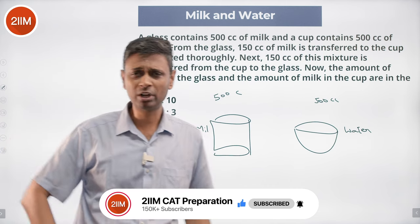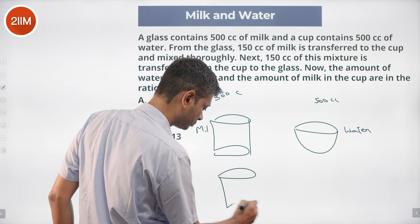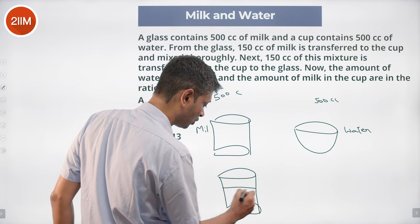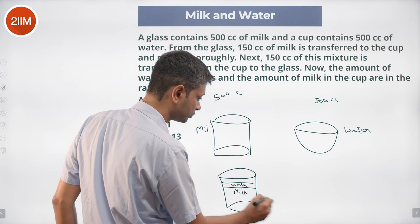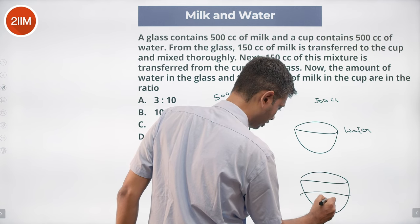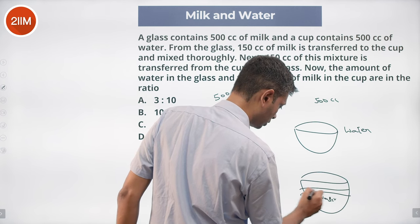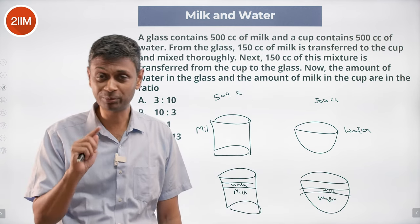So finally, it's going to be some water and some milk. Let's say lots of milk is there and the remaining is water. Likewise, lots of water is there and the remaining is milk. Now think about this - it's a beautiful question.